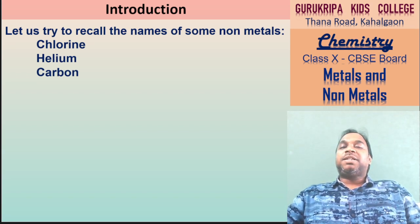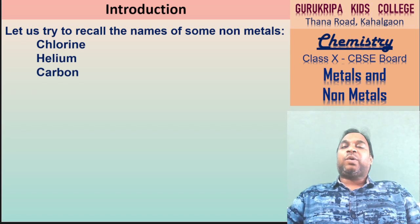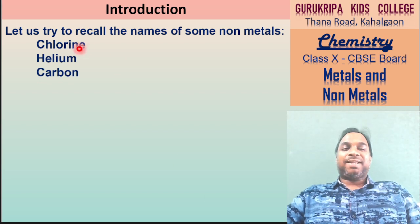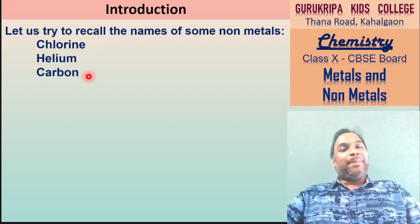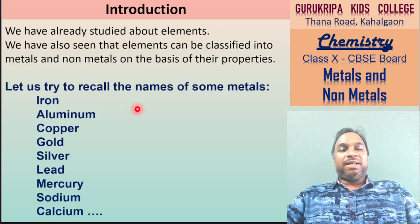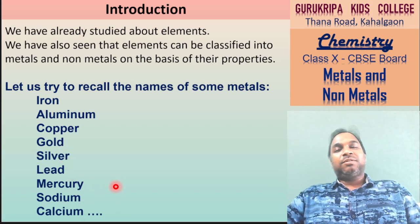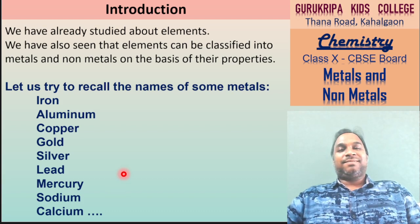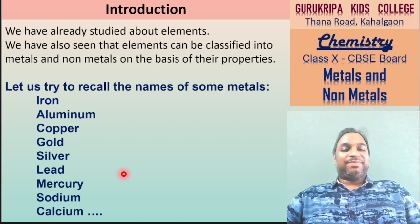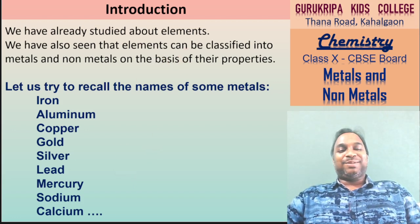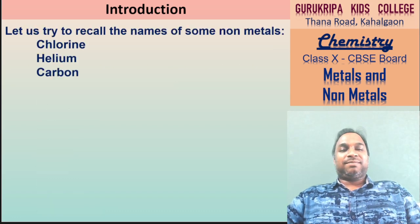तो Metals और non-metals के बारे में हम बात इसलिए कर रहे थे, कि हम लोग check करें properties क्या हैं. According to properties हम decide कर सकते हैं कौन सा metal है, कौन सा non-metal है. यहाँ दिख रहा है - chlorine और helium तो gas हैं. Carbon gas नहीं है. Metals में से एक भी gas नहीं था - जितने भी metals की बात की, सभी solid थे. तो एक property दिख गया कि metal solid होते हैं.